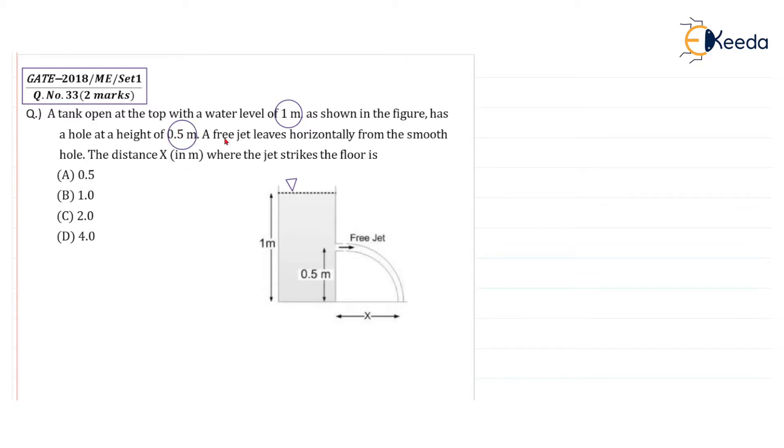A free jet leaves horizontally, this is the free jet which leaves horizontally from the smooth hole. The distance x in meter, this distance x in meter where the jet strikes the floor is 0.5 meter, 1 meter, 2 meter or 4 meter. So we have to find the value of distance x in meter.